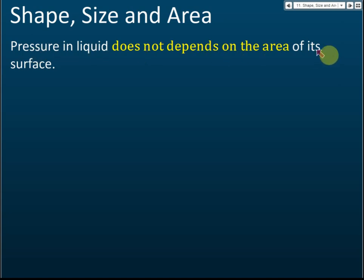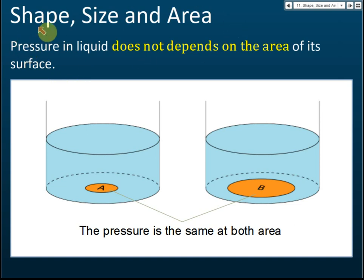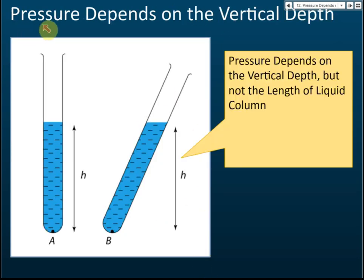Pressure in a liquid also does not depend on the area of its surface. We have two objects A and B with different areas — area A is smaller than area B — but the pressure exerted on area A is the same as the pressure exerted on area B. So to summarize: pressure in a liquid does not depend on shape, size, or total surface area.